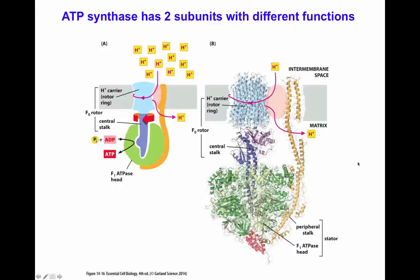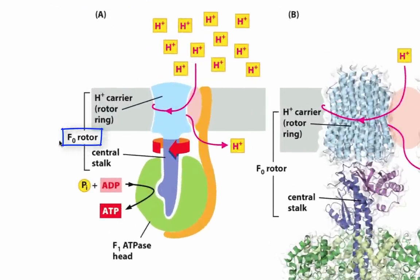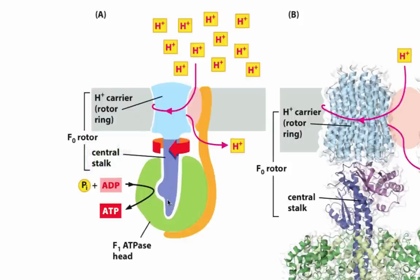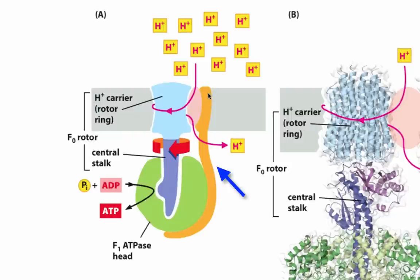The ATP synthase has two different subunits with different functions. One subunit is the rotor, the F0 subunit, which involves a rotor ring shown in light blue, as well as a central stalk with invaginations that allow it to move inside the ATP synthase head, which is the F1 subunit. The other component is the stationary part — the F1 ATPase head — which has a stalk shown in orange, and a set of globular proteins, three subunits of two, that form the ATPase head.